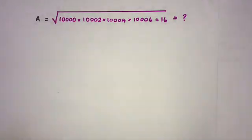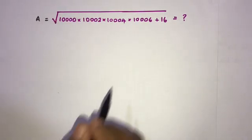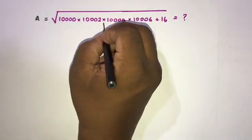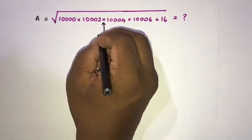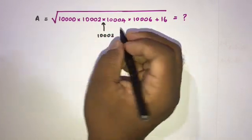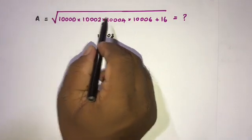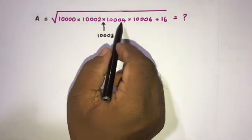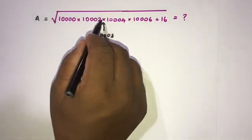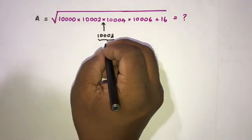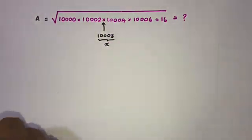First, I am going to call this expression capital A. If we look carefully, 10003 is in between 10002 and 10004, so we take x equal to 10003.